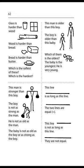Page 62. Glass is harder than wood. Wood is harder than bread. Bread is harder than butter. Which is the softest of these? Which is the hardest? This man is older than this boy. The boy is older than this baby. Which of them is the oldest? The baby is the youngest. He is very young. This man is stronger than this boy. The boy is not as strong as the man. He is not as old as the man. The baby is not as old as the boy, or as strong as the boy. This line is as long as this line. The two lines are equal. This line is not as long as this line. They are not equal.